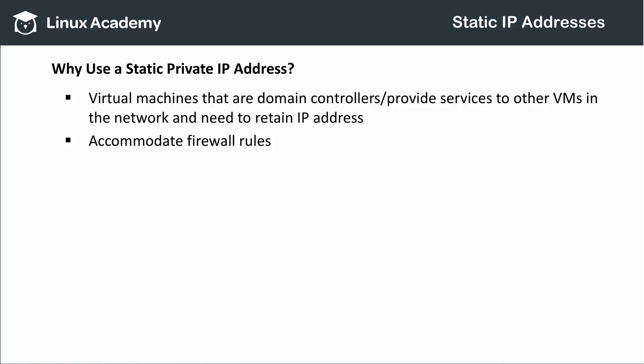When is a static private IP address useful? Anytime a virtual machine provides services to other virtual machines in the same virtual network, you probably want to assign those service VMs a static private IP address. An example of this would be a virtual machine acting as a domain controller. Also, you may have a firewall in your virtual network that requires each VM to have a static IP address.